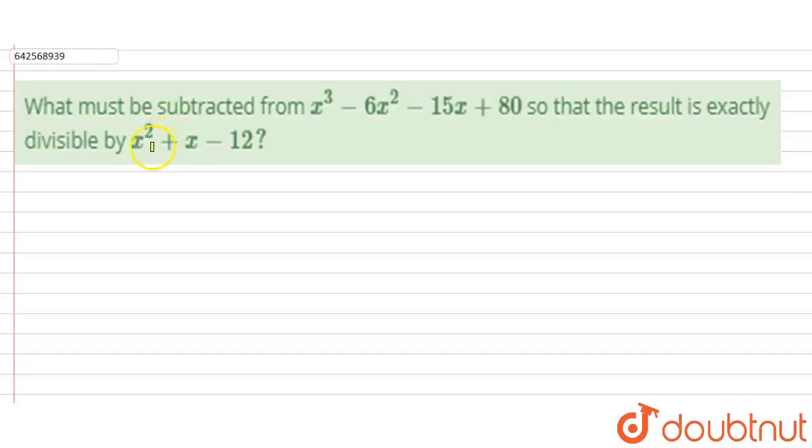Hello everyone, let's start this problem. In this problem, what must be subtracted from x³ - 6x² - 15x + 80 so that the result is exactly divisible by x² + x - 12? If this expression is divisible by x² + x - 12, then the remainder should equal zero. So we have to make the remainder zero. First, we have to find the remainder.